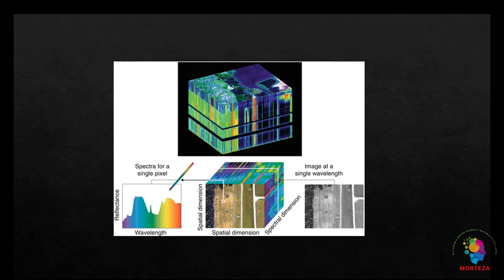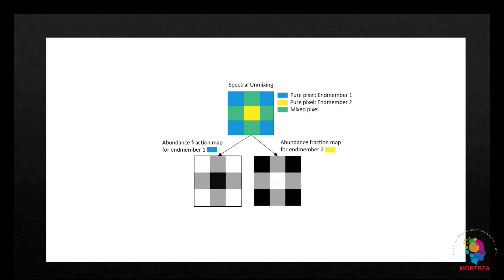Spectral unmixing is the process of decomposing the spectral signatures of mixed pixels into the constituent end members. The spectral unmixing process involves two steps: first is end member extraction and second is abundance map estimation. The spectra of the end members are prominent features in the hyperspectral data and can be used for efficient spectral unmixing, segmentation, and classification of hyperspectral images.